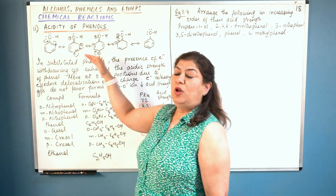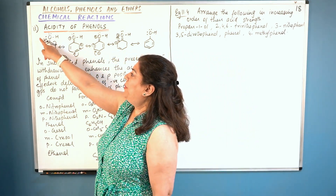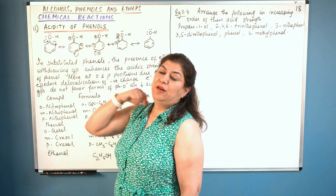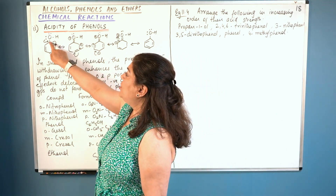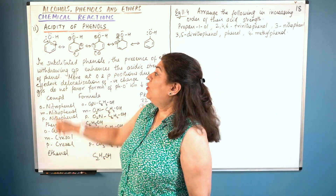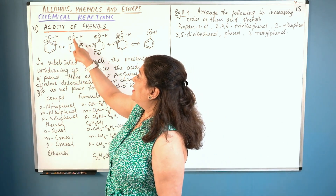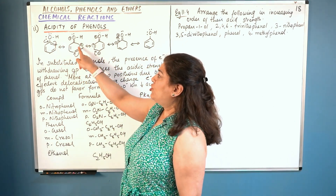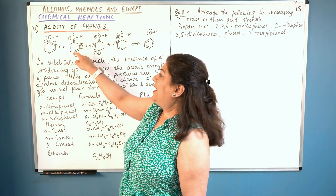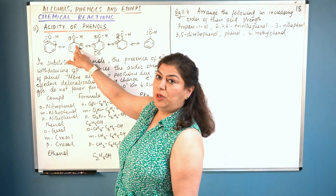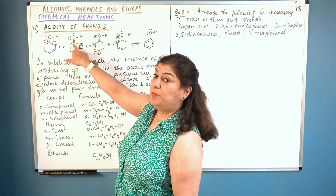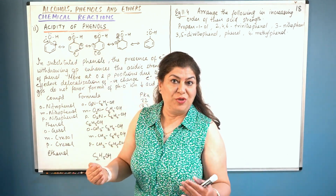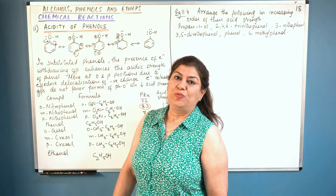The negative charge revolves around the ring. A lone pair of electrons moves and forms a double bond, but since one carbon can form only four bonds, it cannot have five bonds. As soon as a double bond — this pi bond — is formed here, the electrons of this pi bond are pushed to the next carbon. So there is a shift of electrons, and the negative charge shifts to the ortho position.